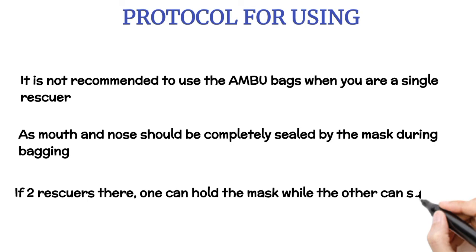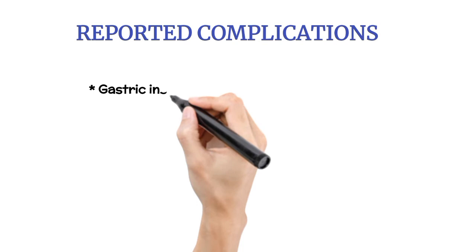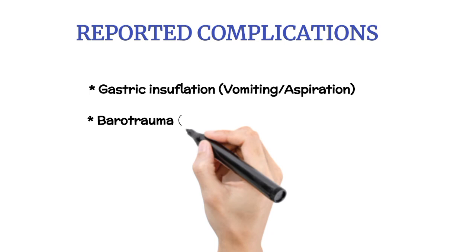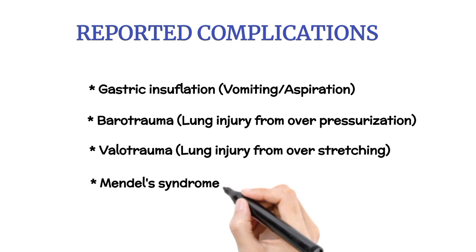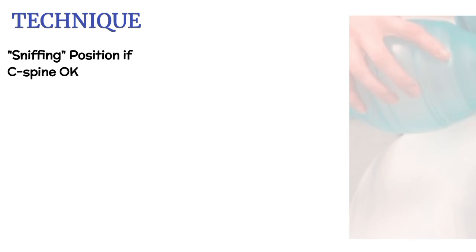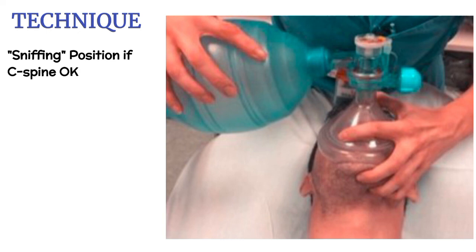Reported complications include: Gastric Insufflation, Vomiting, Aspiration, Barotrauma — lung injury from over-pressurization, Volutrauma — lung injury from over-stretching, Mendelssohn Syndrome, and Hypoventilation. Technique: Sniffing position if cervical spine is okay; use thumb and index finger to maintain face seal, middle finger under the mandibular symphysis, and ring and little finger under the angle of the mandible.